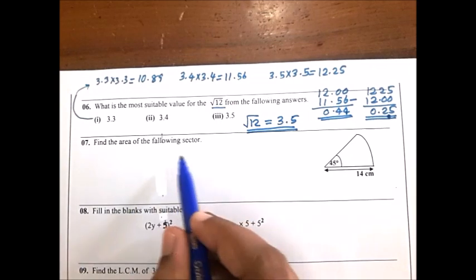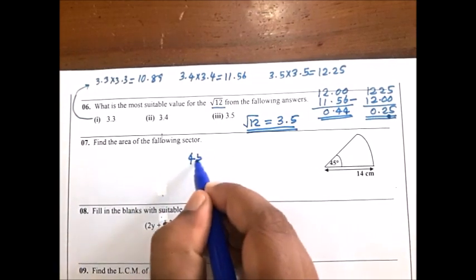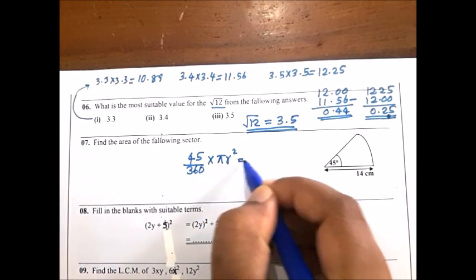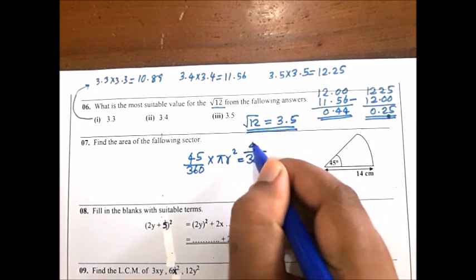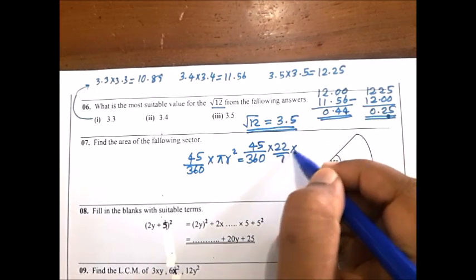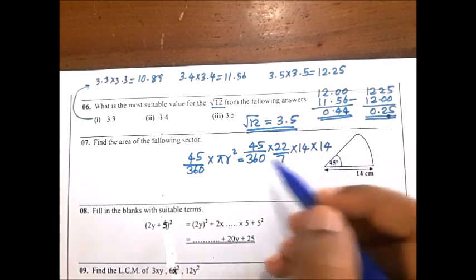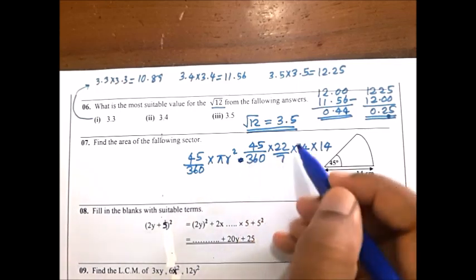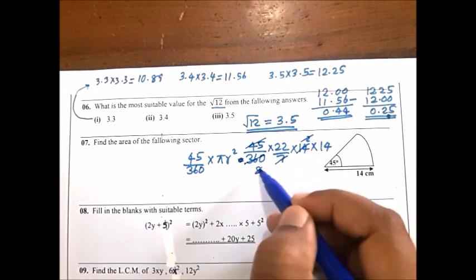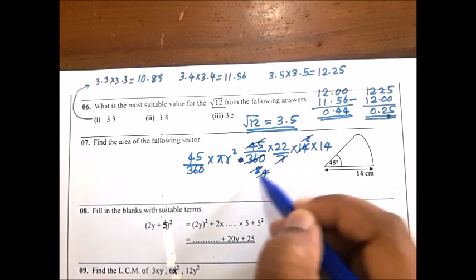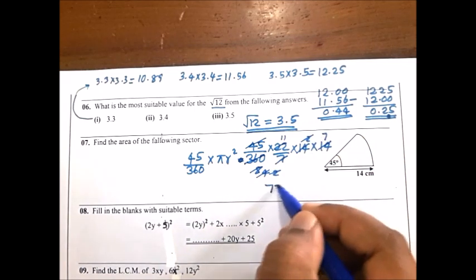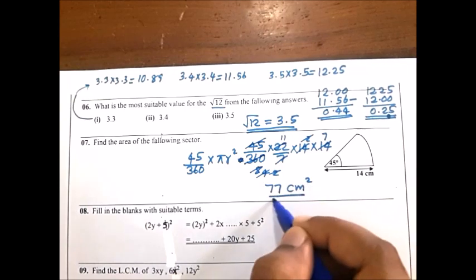Look at the seventh question: find the area of the following sector. The angle is 45 degrees. Use the formula: angle over 360 into πr². Using 22 over 7, radius 14. Cancel 45 and 360 to get 1 over 8; cancel 7 and 14 to get 2; cancel 2 and 8 to get 4; cancel 4 and 22 to get 11; and 2 and 14 gives 7. So 11 into 7 equals 77 square centimeters.